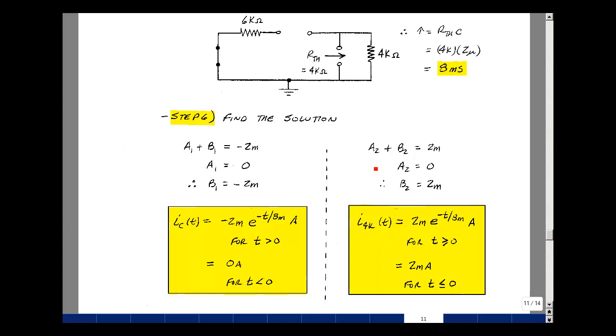Let's solve for I of the 4k resistor. A2 plus B2 was 2 milli. A2 was zero, so B2 is equal to 2 milli. We have zero plus 2 milli, e to the minus t over 8 millisecond amps. And when t was less than zero, we found that the current was 2 milliamps. The resistor current normally can change instantaneously, but it's also related to the capacitor voltage because the capacitor is right across it. If we set t equal to zero here, you get e to the minus zero, which is 1. So you get 2 milliamps, and we have 2 milliamps here. So we're continuous with the current in the resistor because of how it's constrained by the circuit. This is the current for t greater than or equal to zero and t less than or equal to zero. And this is supplemental problem 5.8.